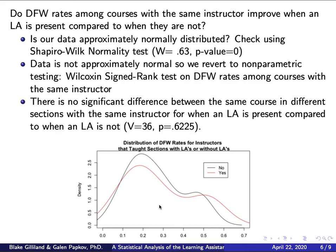For the second test — do DFW rates among courses with the same instructor improve when an LA is present — we again check normality with the Shapiro-Wilk test. In this case, we can conclude with certainty the data is not normal: the p-value was very close to zero. So we use the Wilcoxon signed-rank test, the non-parametric analog to the paired two-sample t-test. We get a statistic of 36 and a p-value of 0.6225.